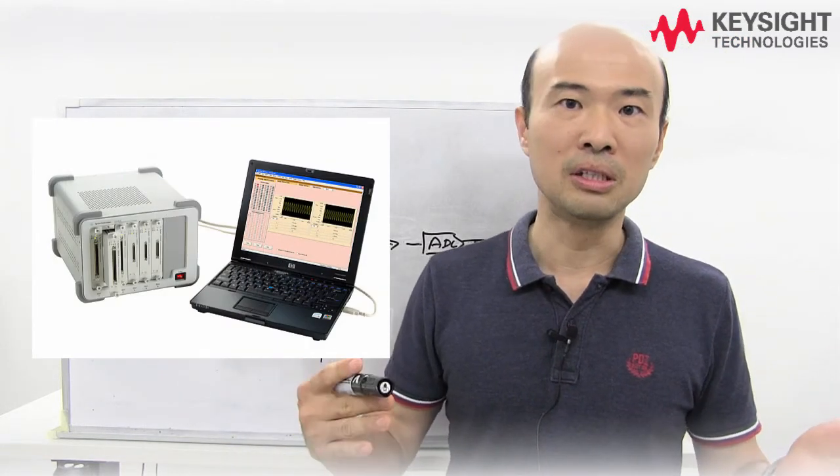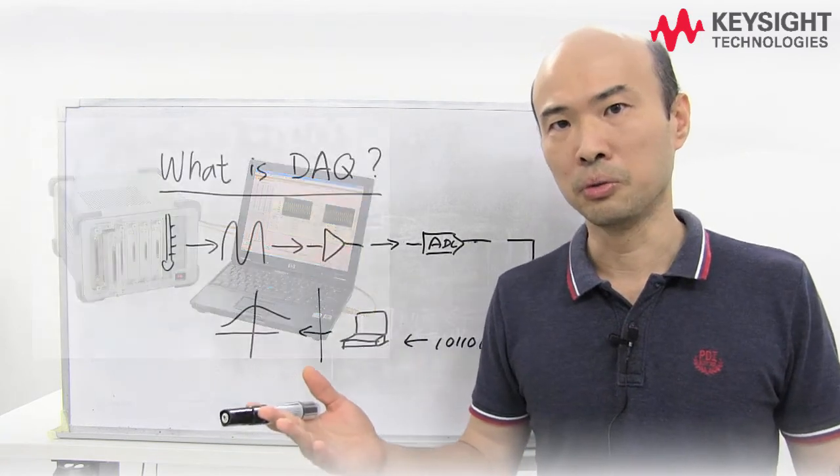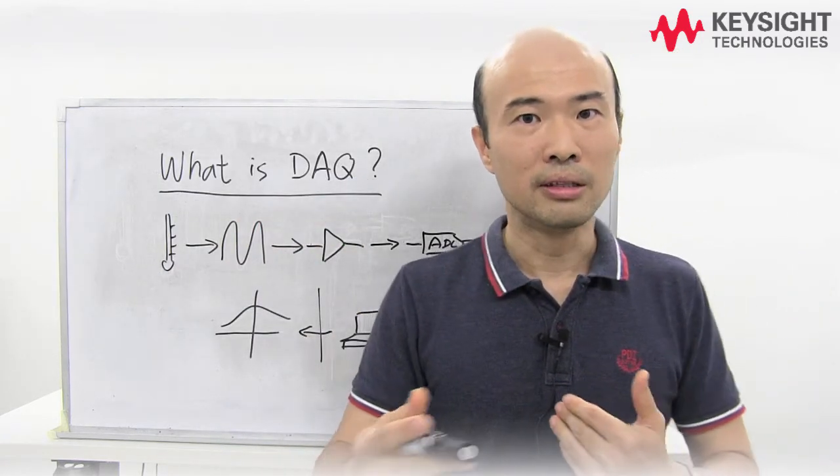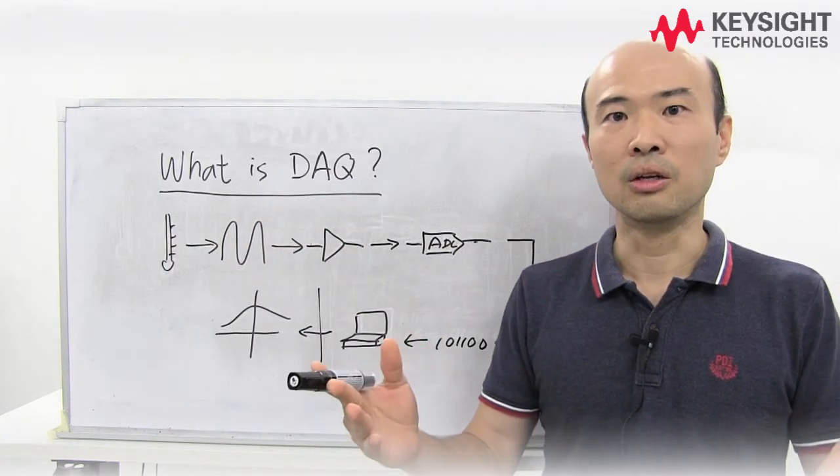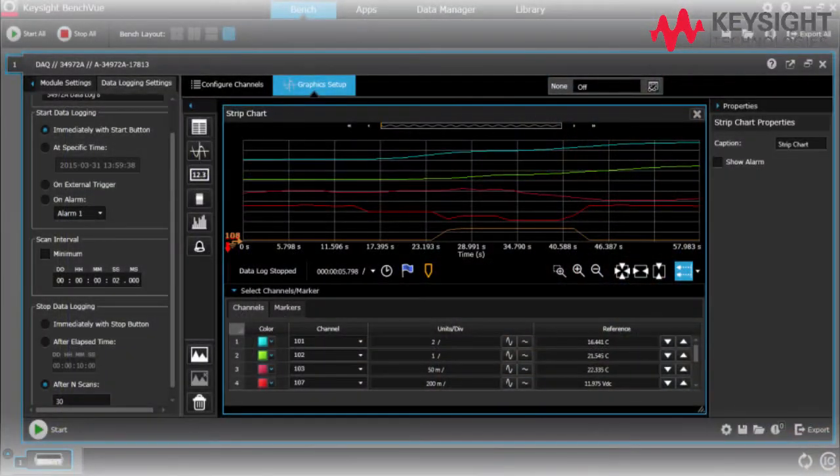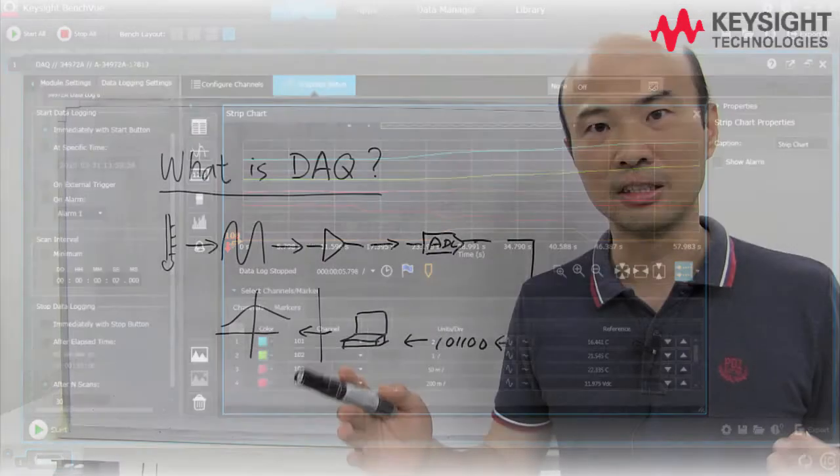The DAQ also has a built-in DMM to do signal conditioning for you. With modern firmware, the DAQ can also function as a standalone data logger. Now if you use BenchVue for your data collection, you can quickly do statistical analysis using BenchVue.